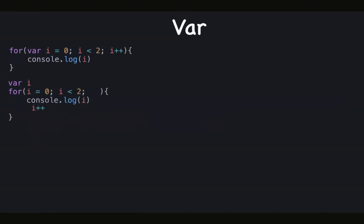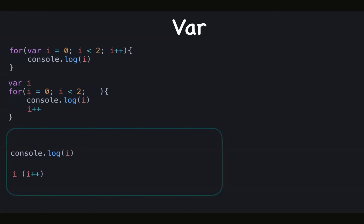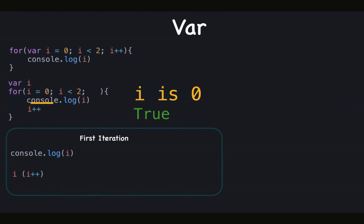One thing to remember is we have only one i, which gets reassigned in each iteration. Now let's see the execution. In the first iteration, i is zero. We check the condition: zero less than two, which is true. Since it's true, the code inside the block gets executed — we get console.log zero, and i gets incremented to one at the end of the first iteration.